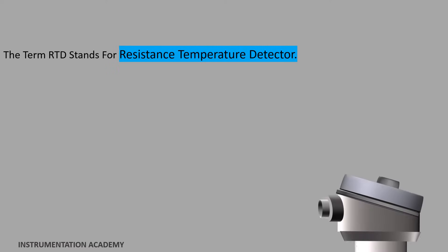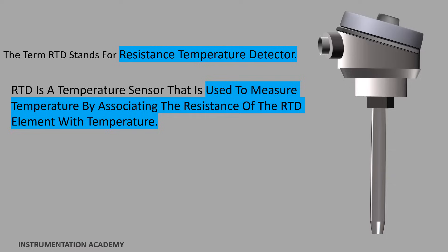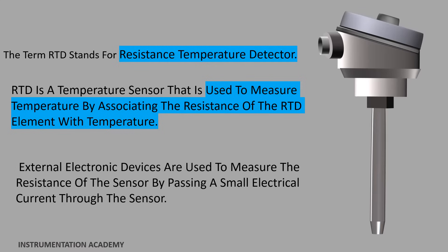The term RTD stands for resistance temperature detector. RTD is a temperature sensor that is used to measure temperature by associating the resistance of the RTD element with temperature. An RTD is a passive device. External electronic devices are used to measure the resistance of the sensor by passing a small electrical current through the sensor.